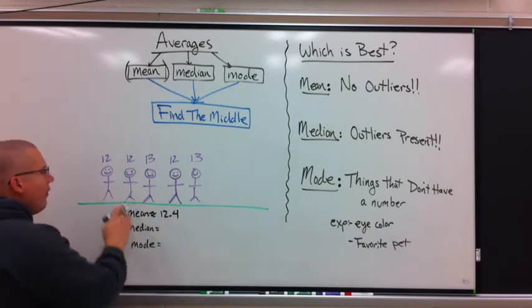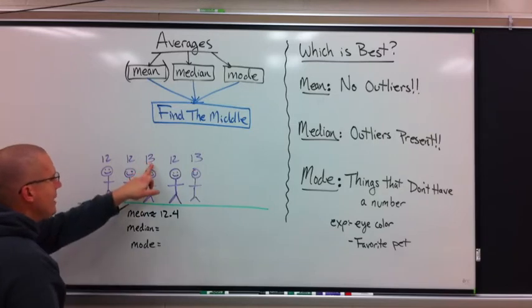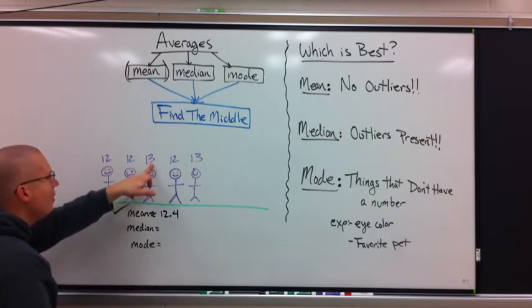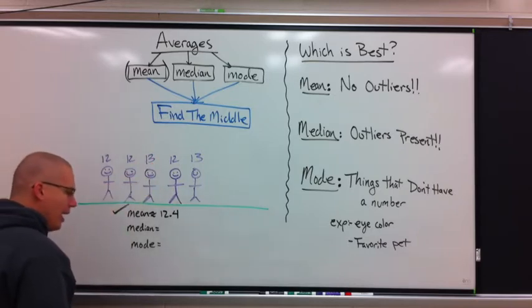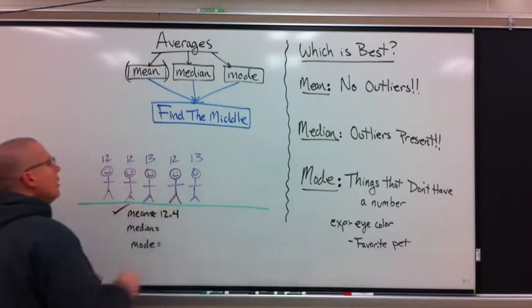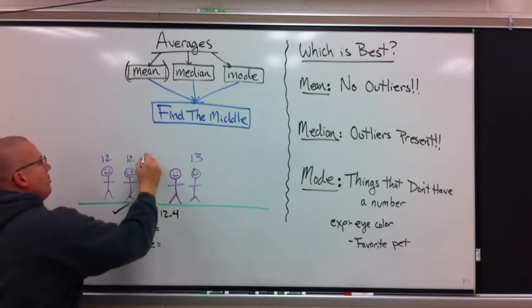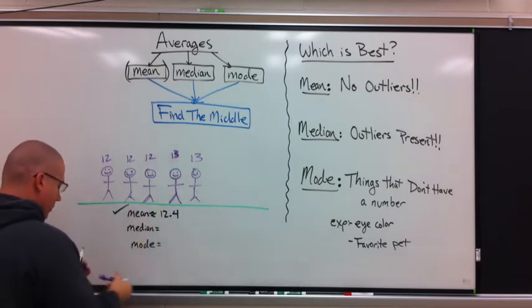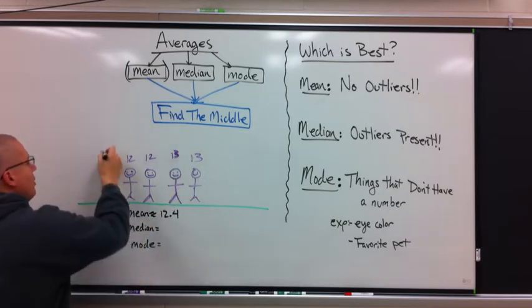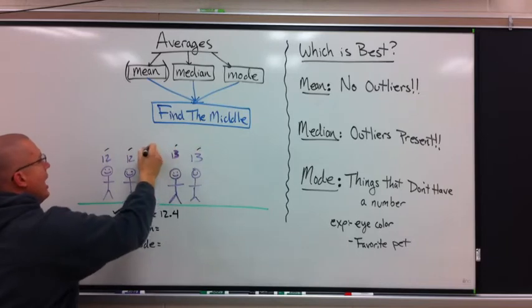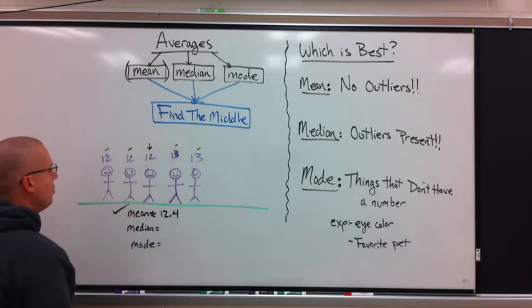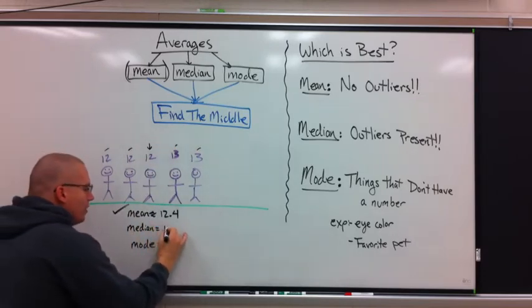Median, find the middle number. No, it's not 13. Why is it not 13? What must happen first before I find the middle number? That's right, they have to go in order. So I'm just going to move these two around. This becomes a 12, this becomes a 13. Cross off the outsides. One, one, one, one. Hey, I got one middle number.